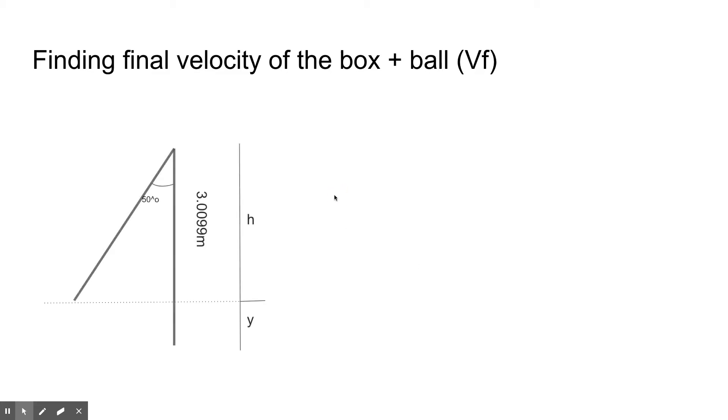Now the first step in our calculation is finding the final velocity of the box and the ball together, because remember this is a perfectly inelastic collision because both of the balls became one after the ball was hit, both the box and the ball. So here's the contraption we made. Here, this is where the box initially was. I hit the tennis ball into the box and it swung 50 degrees according to our online protractor.